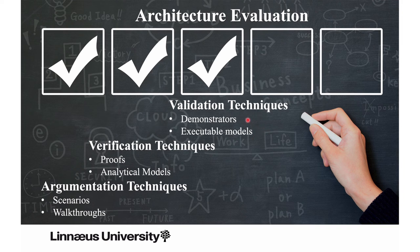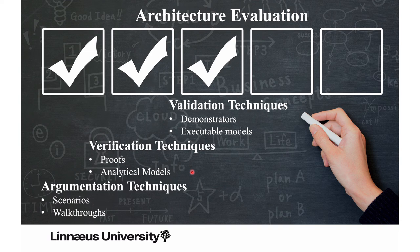Climbing the formality scale, you reach validation: you can develop a demonstrator, perform an architectural spike, and use that demonstrator to communicate with stakeholders. You can also use other types of executable models to validate the architecture's response with respect to some stimuli. At the highest degree is verification, where you verify the system for certain properties using mathematical proofs or analytical models — for example, a performance model — where calculations produce results that support your claims about a quality.